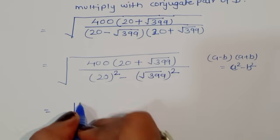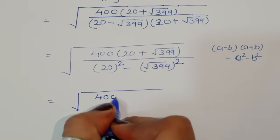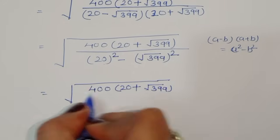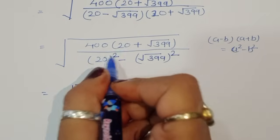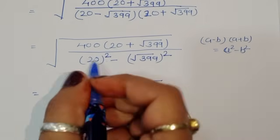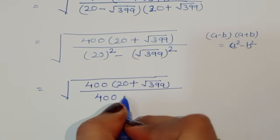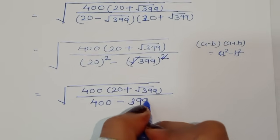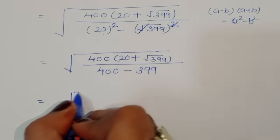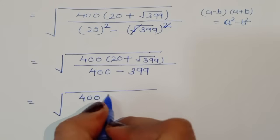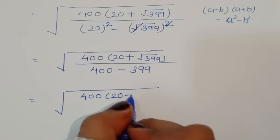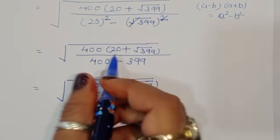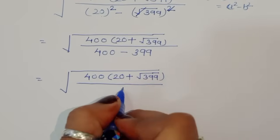So we get 400 times (20 plus √399) divided by 20² which is 400, minus (√399)² where the square cancels with the square root leaving 399. So the denominator is 400 minus 399, which equals 1.